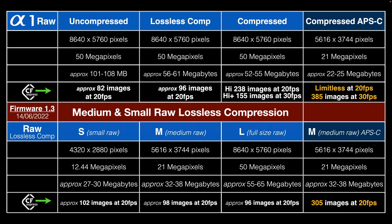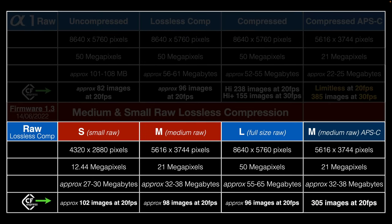The newer RAW file formats are in the lower half of this chart. The two new ones are small RAW and medium RAW. We are dropping the megapixel size when choosing small or medium RAW, but this is lossless compression, so we get the full 14-bit files. The smallest is 12.44 megapixels and the medium is 21 megapixels. That 21 megapixels is the same as when recording in APS-C mode. If you choose APS-C mode with lossless compression, the pixel dimensions and megapixels are the same, but you get slightly more frames in a sequence — we can triple the number of frames at 20 frames per second.